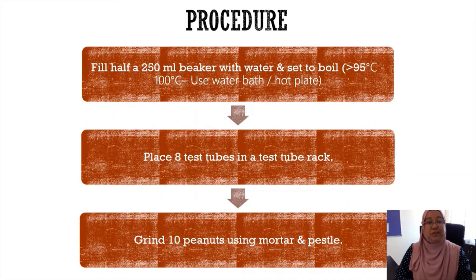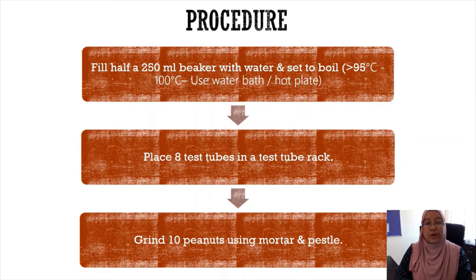For the general setup, fill a 250 ml beaker with water and set it to boil, making sure the temperature is above 95 degrees Celsius. Place eight test tubes in a test tube rack, and grind 10 peanuts using a mortar and pestle.